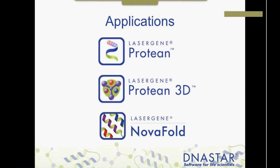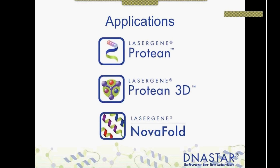DNA Star began venturing into protein analysis software back in 1998 with the introduction of Protein, created to mine information from protein sequences, predicting and displaying patterns, secondary structural characteristics, and physiochemical properties. In 2011, Protein3D was introduced — our application for exploring macromolecular structure, motion, and function, using graphical views to visualize structures and customize rendering. Then in 2013, we introduced NovaFold, our protein structure prediction program, integrated with Protein3D and featuring the high-performance computing of the Amazon Cloud.